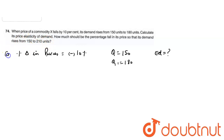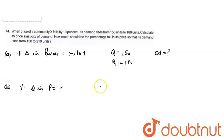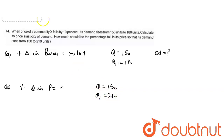So this is our Part A. The Part B is asking: what do we have to find? The percentage change in price when our demand goes from 150 to 210 units.